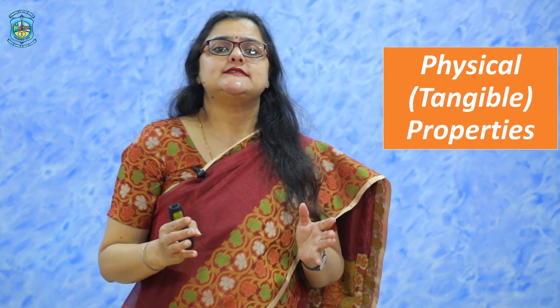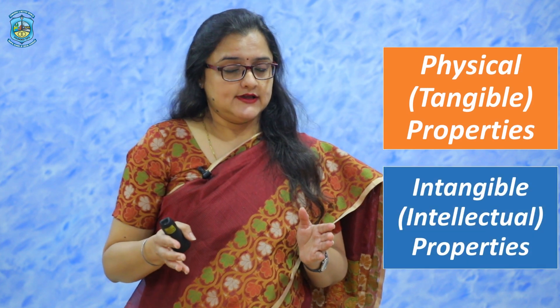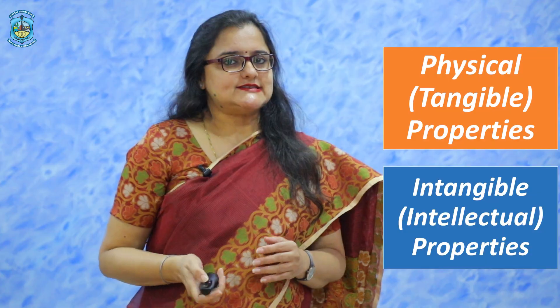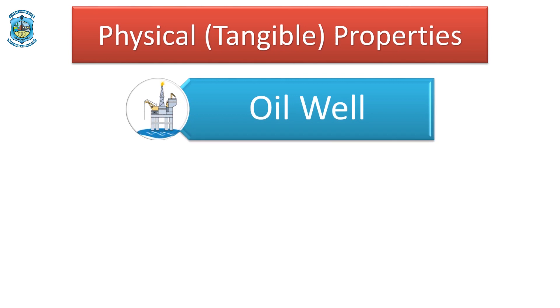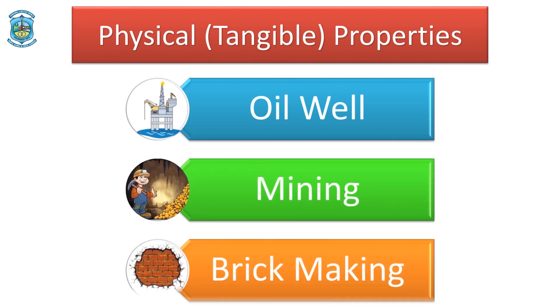The second component is the property which belongs to the owner. It has the potential to be used commercially and it is both physical or tangible in nature as well as intangible or intellectual in nature. Physical or tangible property in the case of royalty includes oil wells, mining, and brick making, while intangible or intellectual property includes patents and copyrights.